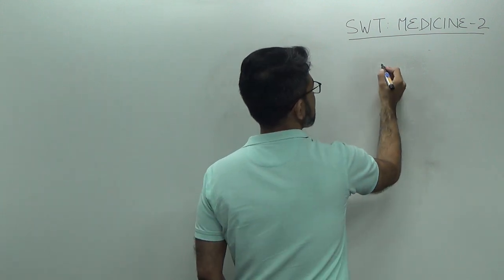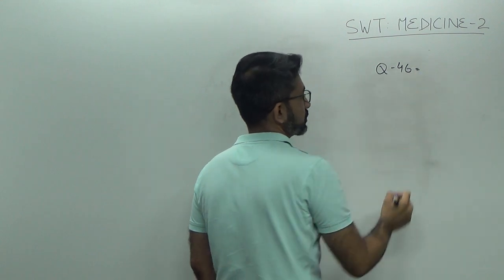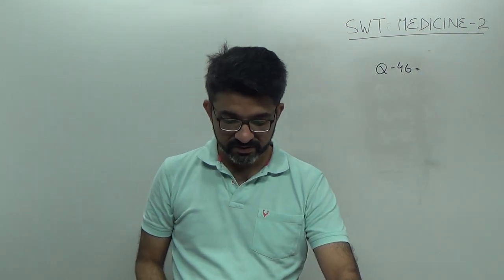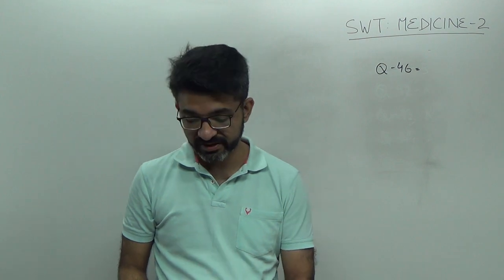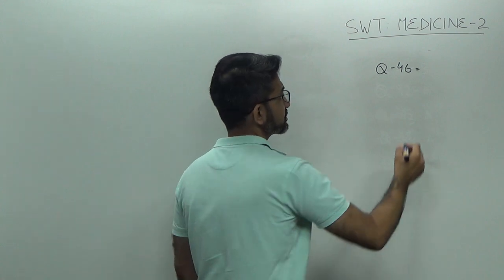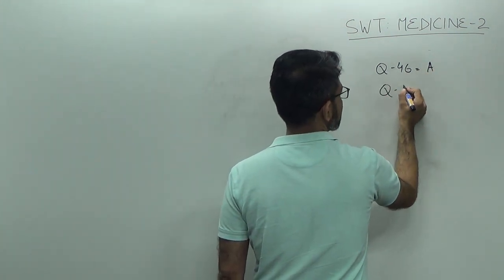Question number 46, this is regarding Metavir score, this is for classification of hepatitis, the scoring is between 0 to 4, remember it. Answer is A.